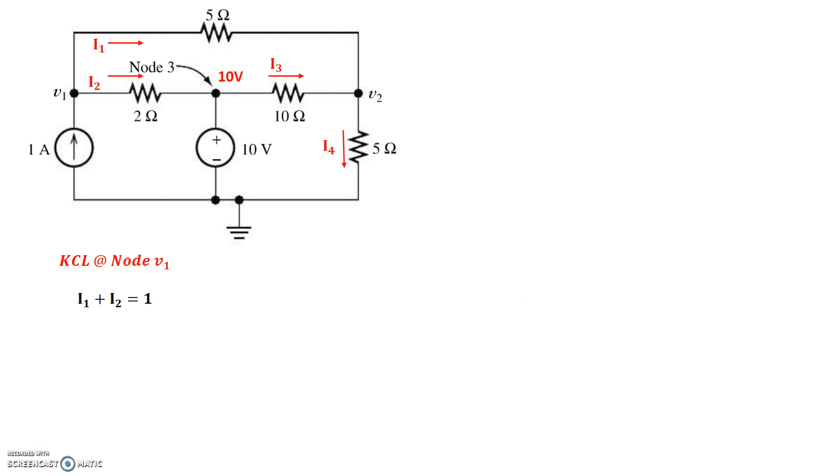I1 starts at V1 and ends at V2 through the 5 ohm resistor. So it's V1 minus V2 divided by 5. And I2 starts at V1 and ends at 10 volts, so V1 minus 10 divided by 2 and that is all equal to 1. So let's group all the V1s and the V2s together like we've been doing for the other problems. And this is what we end up with.